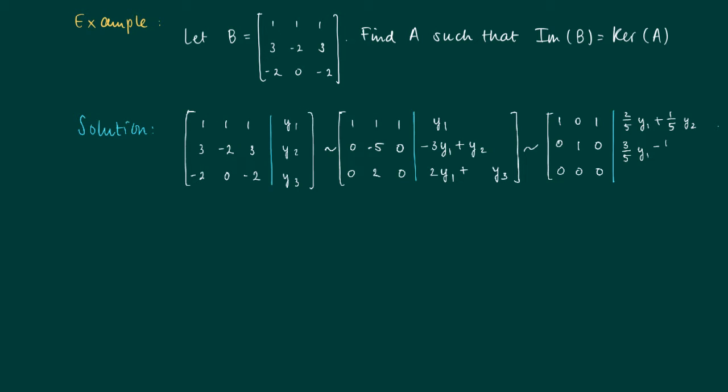Now we achieve the clean system and we see that actually the vector y would be in the image of B if the system on the right-hand side is consistent. So the system here should be consistent. When is this system consistent?